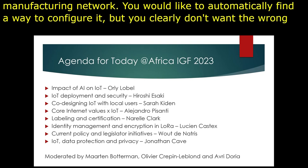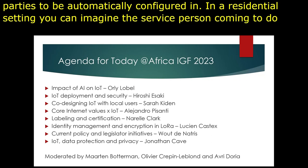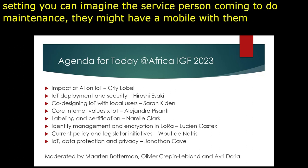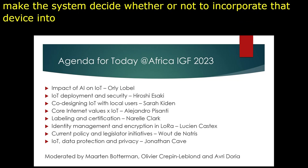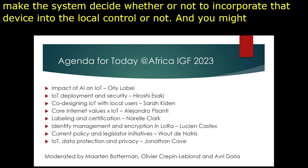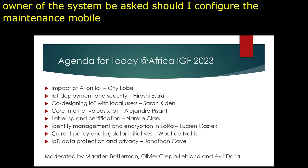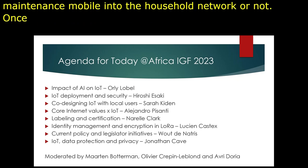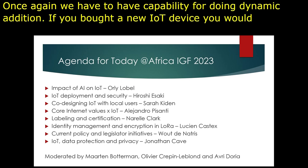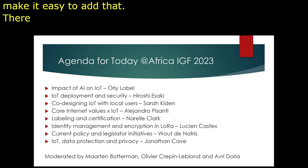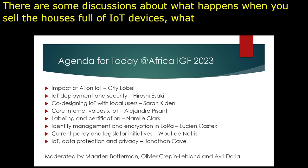There's also a dynamic discovery question for some types of these devices. When something shows up that should become part of the residential or corporate network, you'd like to automatically configure it — but you clearly don't want the wrong parties to be automatically configured in. In a residential setting, you can imagine a service person coming out to do maintenance with a mobile device. You might detect their presence, but the system needs to decide whether to incorporate that device into local control. As the owner of the system, you might be asked whether to configure the maintenance person's mobile into the household network. There are also discussions about what happens when you sell a house full of IoT devices — what does the recipient do, and how do we make reconfiguration easy?